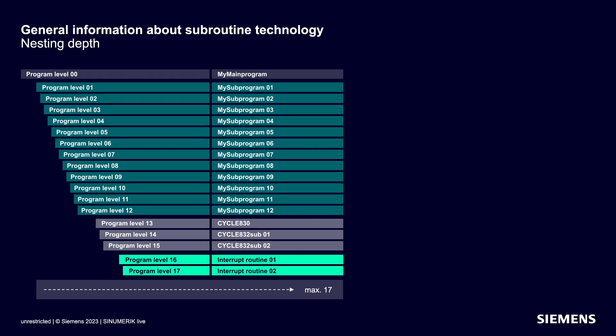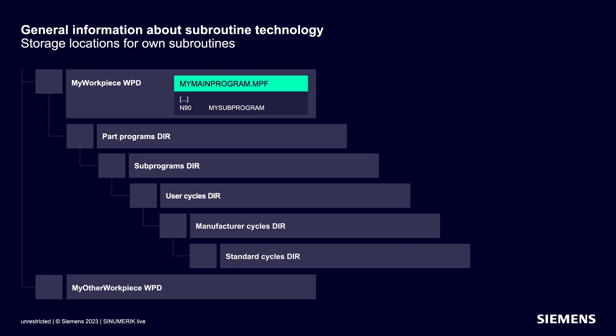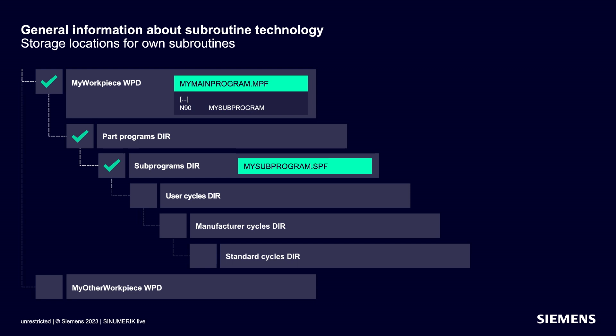As you can see, there are more than enough program levels available to the user for even the most complex production orders. But where can we put our sub-programs to store them, and where can we actually find them? Let's take a look at the search sequence and access rights. The sub-program search starts in the folder of the calling main program, then in the collective folder for main programs, then in the folder for sub-programs, and then in the folder for user cycles — you could store your sub-program in these folders.